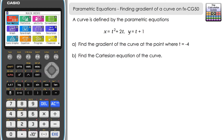A curve is defined by the parametric equations x equals t squared plus 2t, and y equals t plus 1. t is our parameter, and we've got two parts to the question: find the gradient of the curve at the point where t equals minus 4, and part b, find the Cartesian equation of the curve.